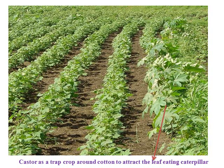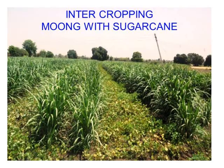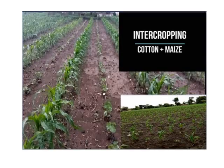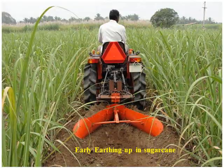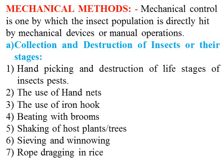Castor is used as a guard crop or trap crop for cotton, to attract the spodoptera caterpillar. Marigold intercropped with sugarcane, intercropped cotton with mung bean, and intercropped cotton with maize are also shown as examples. Earthing up of sugarcane is demonstrated. This also shows flooding of rice fields to minimize the attack of the brown plant hopper.